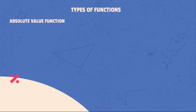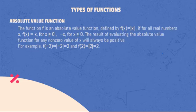Absolute Value Function: The function f is an absolute value function, defined by f(x) = |x|. If for all real numbers x, the function of x is equal to x for x that is greater than or equal to 0, and -x for x that is less than or equal to 0. The result of evaluating the absolute value function for any non-zero value of x will always be positive. For example, both f(-2) and f(2) will equal to 2 if it is an absolute value function.